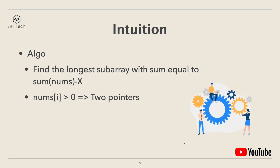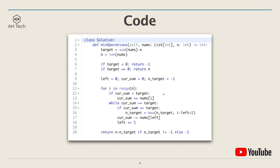The key intuition to solve this question: since every step we're able to remove the leftmost or rightmost element, it's actually equivalent to finding the longest subarray with sum equal to the sum of the nums array minus x. And since every element in the nums array is positive, we are able to use two pointers or a sliding window to find such a subarray.